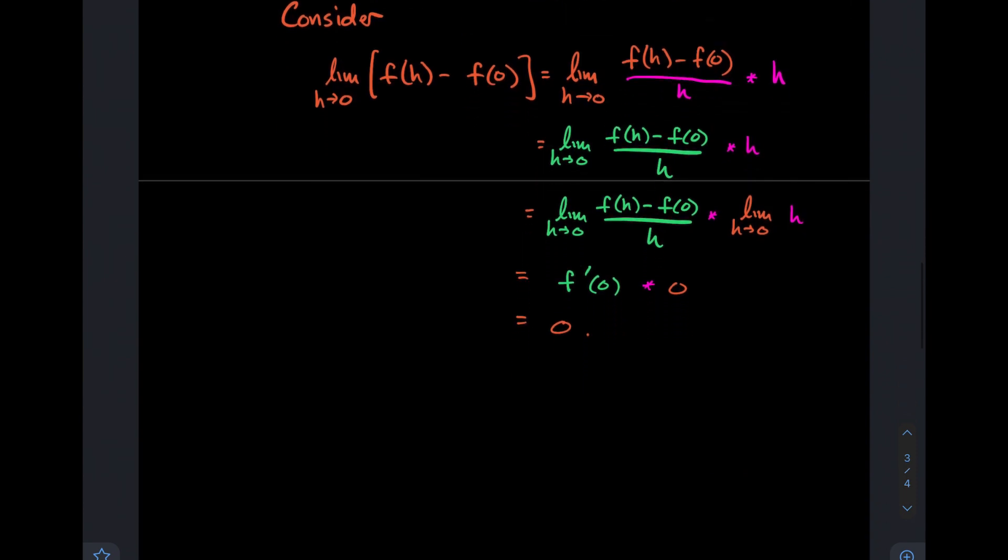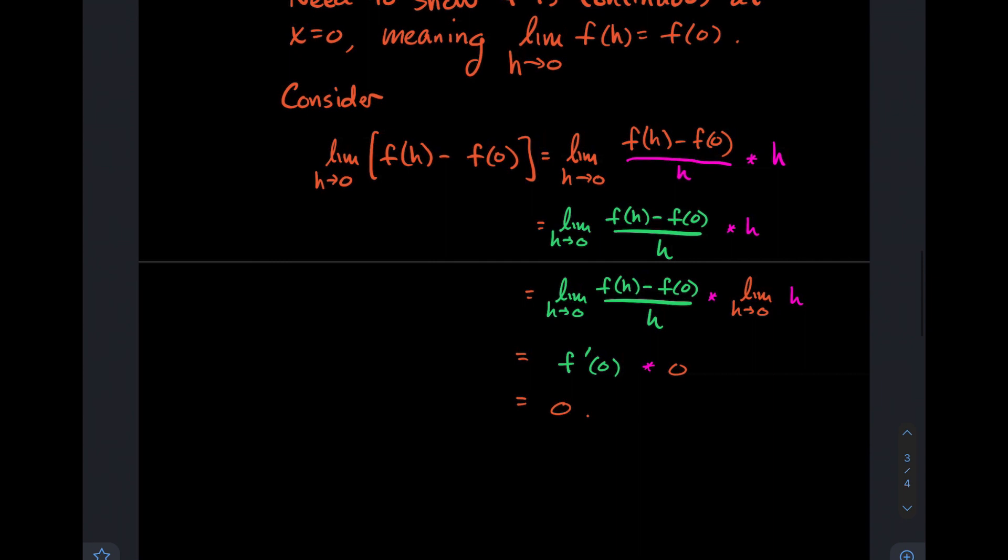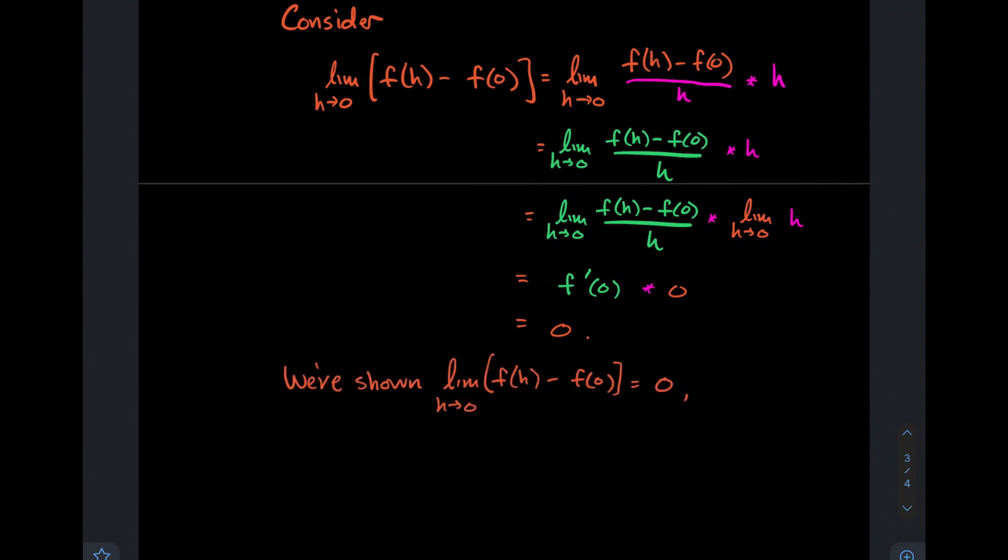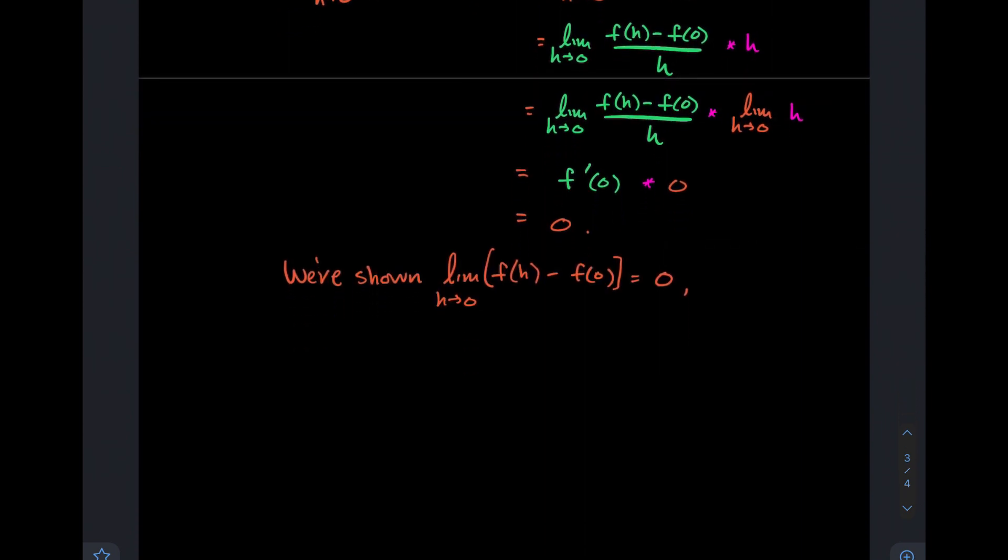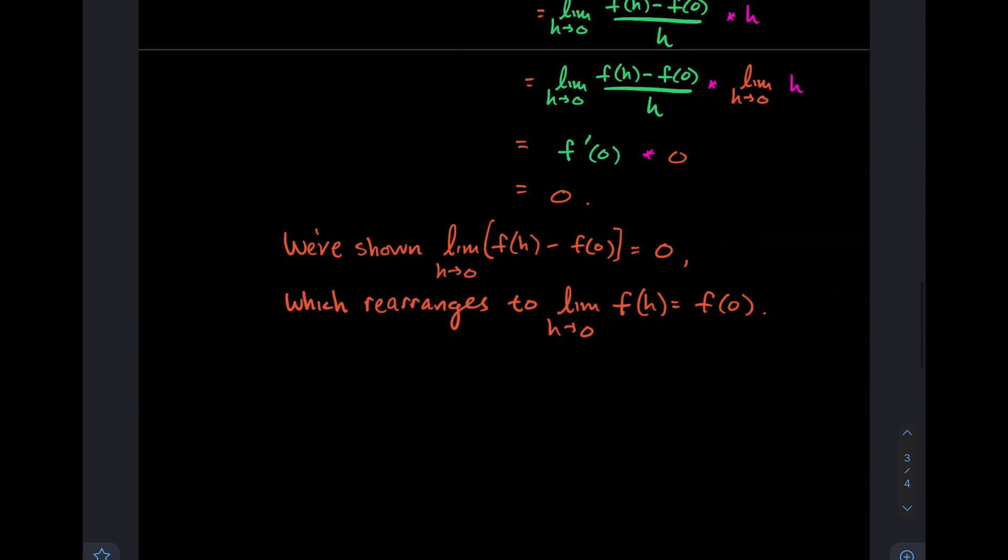Let's recap. In the very beginning, I didn't assume when I moved—I essentially moved f(0) to the left side of what I wanted to show in the beginning, but I didn't assume it was equal to 0 right off the bat. We've gone through these steps to prove that it has to equal 0, and that's important. So we've shown that that limit of f(h) minus f(0) is 0.